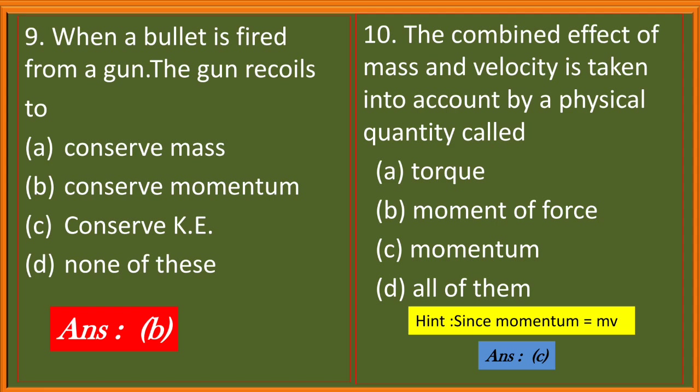Question 10. The combined effect of mass and velocity is taken into account by a physical quantity called: torque, moment of force, momentum, all of them. Since we know that momentum is the product of mass and velocity, so here the correct answer is C, momentum.